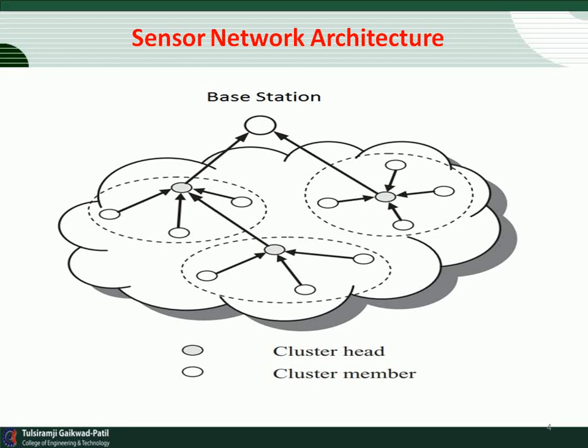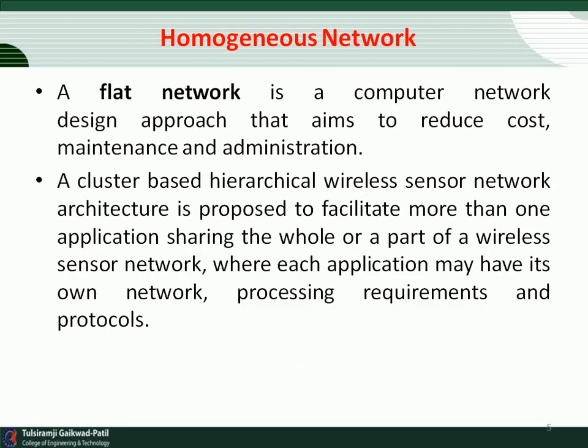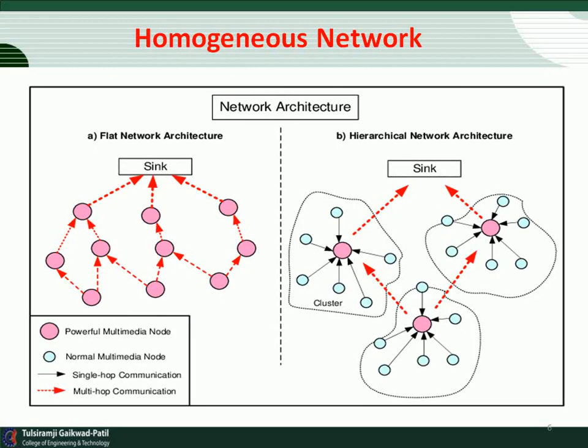The first type is the homogeneous sensor network. A homogeneous network consists of a base station and nodes. It consists of a base station and sensor nodes equipped with equal capabilities, for example computational power and storage capacity. Data gathering in this type of network is based on the structure of data dissemination.